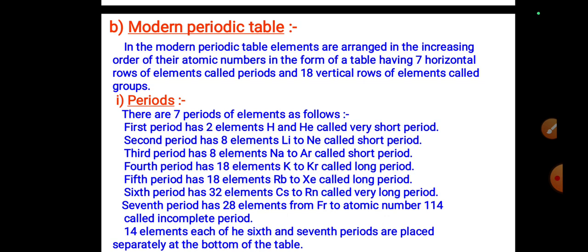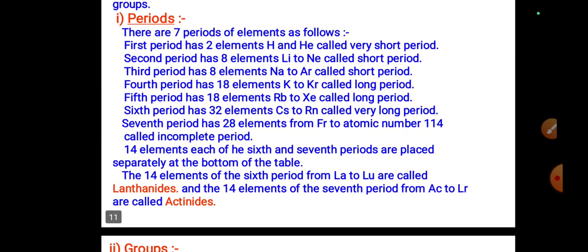In the modern periodic table, elements are arranged in increasing order of their atomic number in a table having seven horizontal rows called periods and 18 vertical columns called groups.